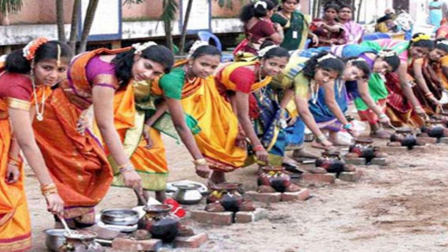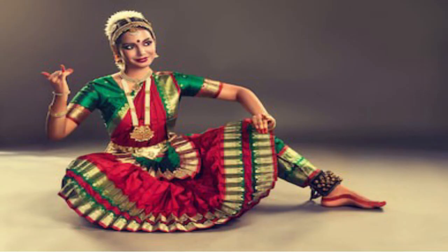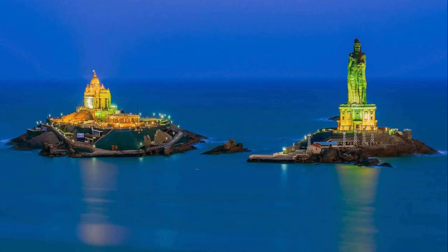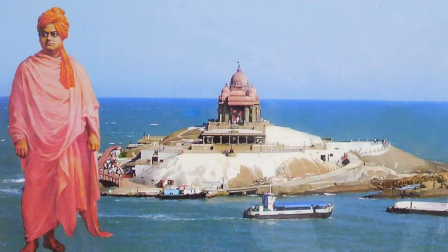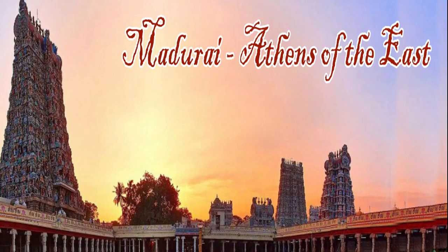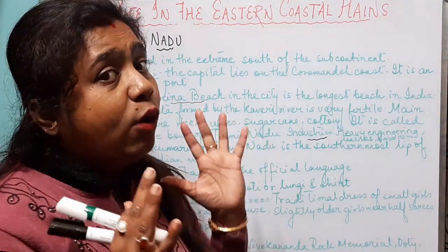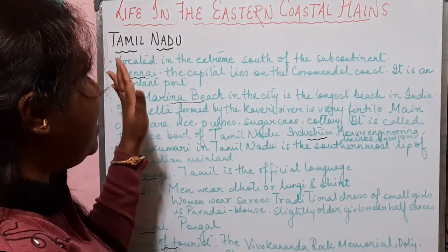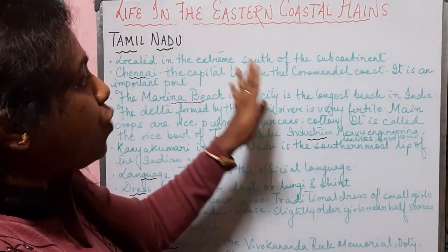Bharatanatyam is the most famous dance form of Tamil Nadu. Places of tourist attraction include Kanyakumari, the southernmost tip of the Indian mainland, the Vivekananda Rock Memorial built on a small island near the coast, and also Ooty, Chennai, Kanchipuram, Madurai, and Thanjavur.